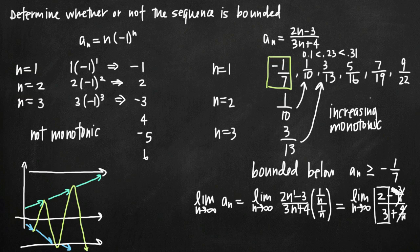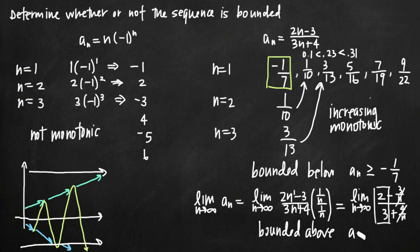We're left with just 2 over 3, so the limit is 2 thirds. This tells us that the sequence levels off and has an infinite limit of 2 thirds. Because the sequence never actually reaches this limit, a sub n is always less than 2 thirds. So the sequence is bounded above by 2 thirds. Since it is bounded both above and below, we can say that the sequence is bounded.